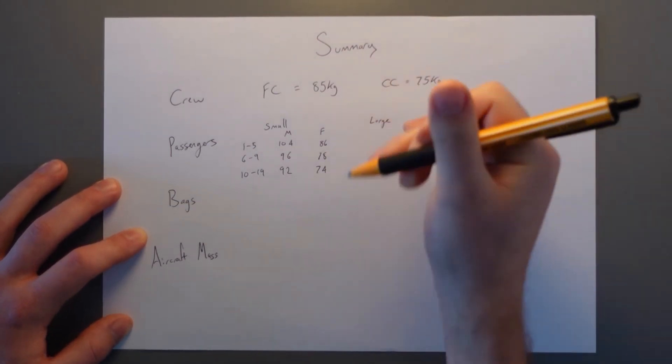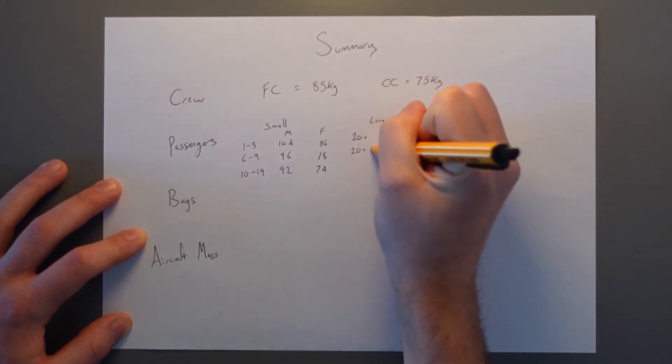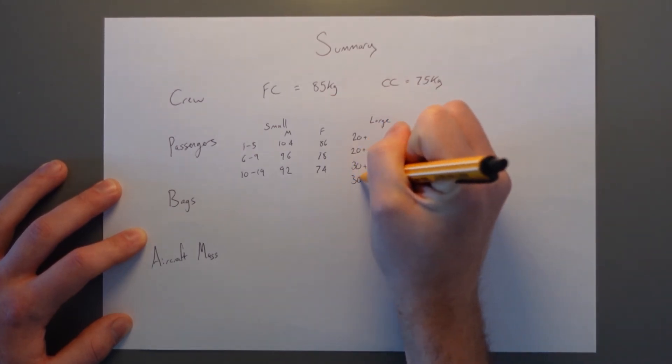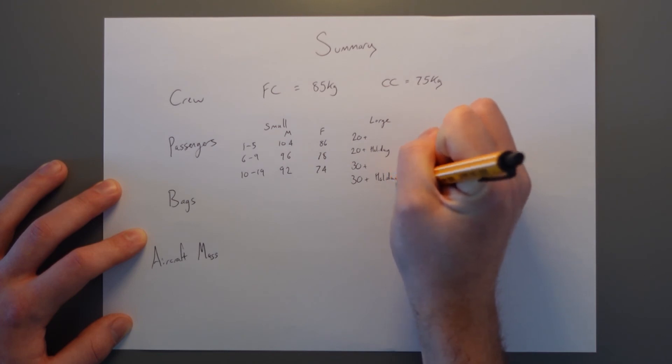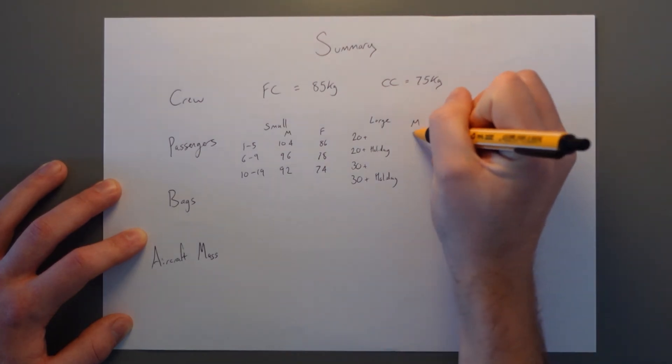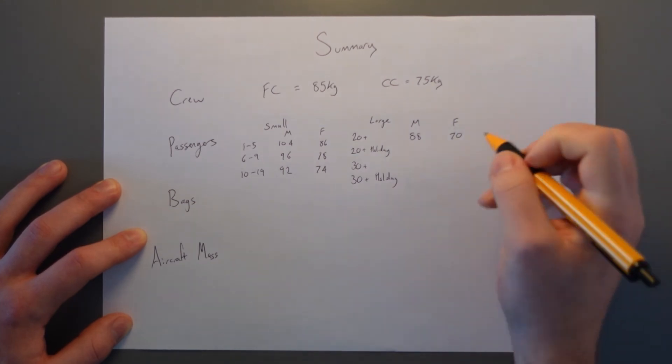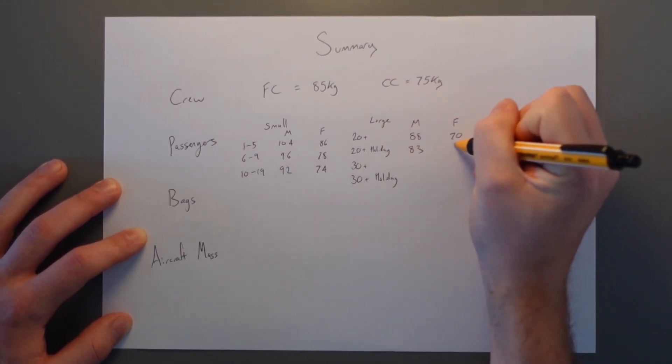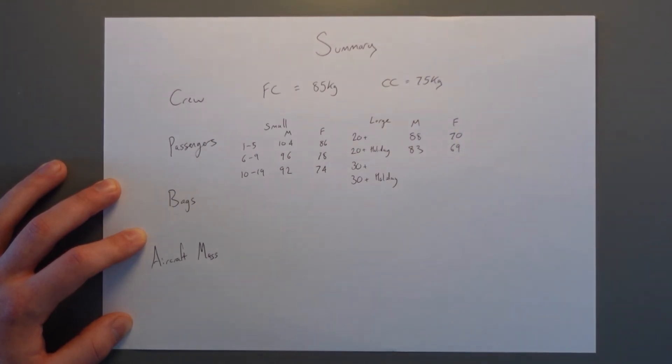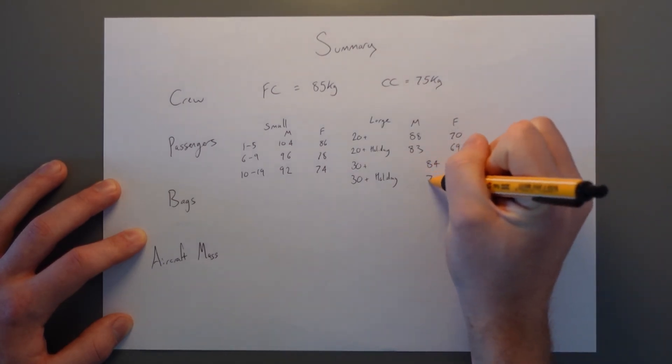For large aircraft, we've got four breakdowns. 20 plus, 20 plus holiday charter. We've got 30 plus and 30 plus holiday charter. Again, they come in male and female. Male for 20 plus is 88, female 70. For a 20 plus holiday, it's 83 and 69. 30 plus is what we use every day. We combine male and female into a standard passenger mass of 84 kilograms. And for holiday, it drops to 76.